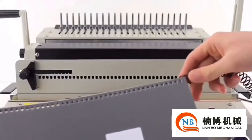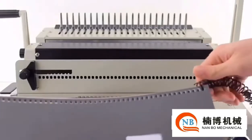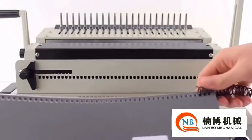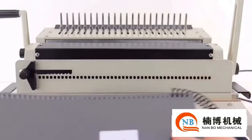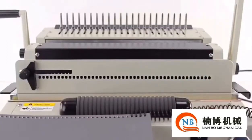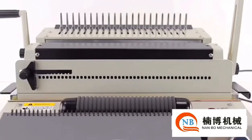With my book all punched, push the coil in about four coils by hand. Flip the front switch to bind. Hit the foot pedal or the button to activate the roller. Place the coil on until it spins through your entire project.